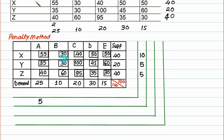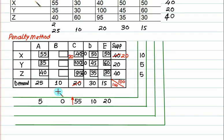For 30 and 30, the penalty is 0. For 40 and 95, it is 55. For 45 and 30, it is 5 and 10. This one is 20 — 30 and 50 is 20. The maximum penalty is in this column, and the minimum cost in this column is 40. Out of 40 and 20, we can allocate 20. So 20 is cancelled and we have a remainder of 20. The column capacity is now exhausted.